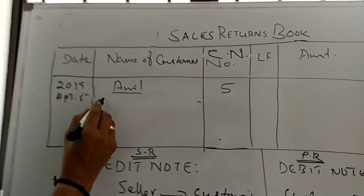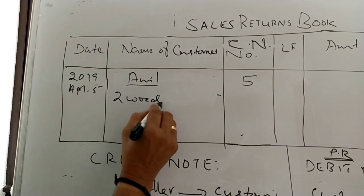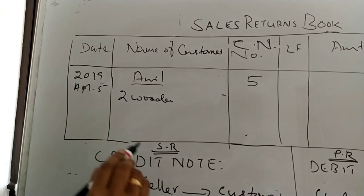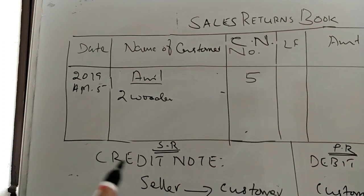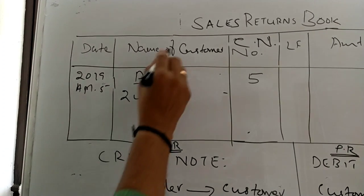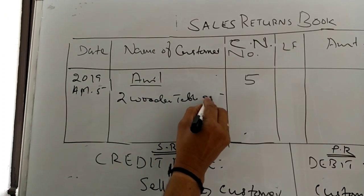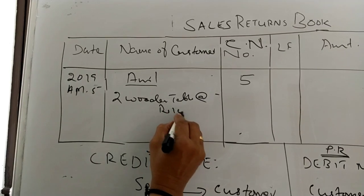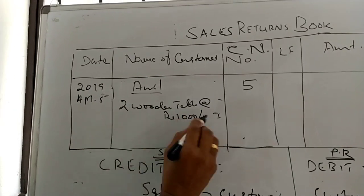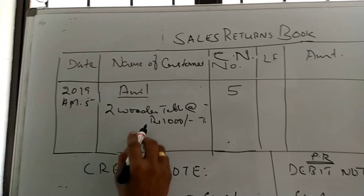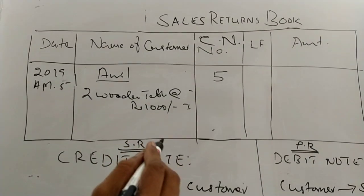Now, we have two wooden tables to return. Let's get the details for the customer. A wooden table, a thousand per table. One table — two wooden tables. And then we have two wooden tables to record.